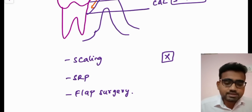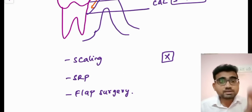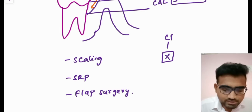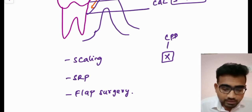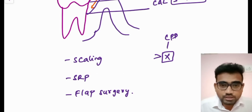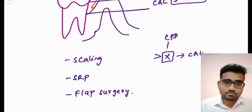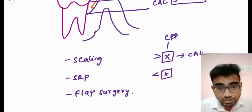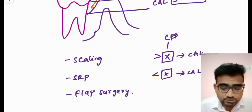Let's say X is your critical probing depth. By definition, if you do something above the CPD you are going to get clinical attachment gain. For example, if you are doing scaling and this is the CPD for scaling and root planing, and the patient's probing depth is more than the CPD, you are going to get clinical attachment gain. If the critical probing depth is less but you are still doing scaling and root planing — which is not needed — that is going to result in clinical attachment loss.